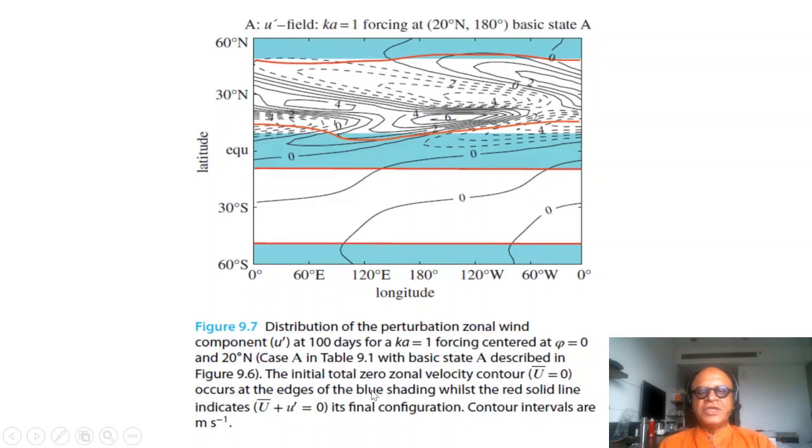The initial total zonal velocity contour u-bar equals 0 is at the edges of the blue shading whilst the red solid line indicates u-bar plus u-prime equals 0 in the final configuration.